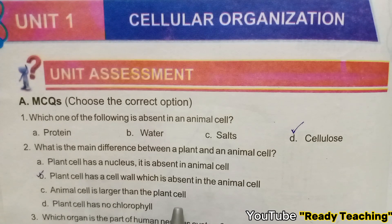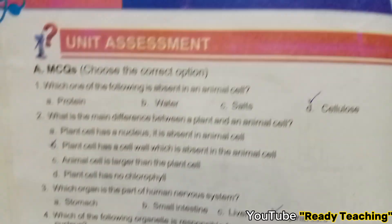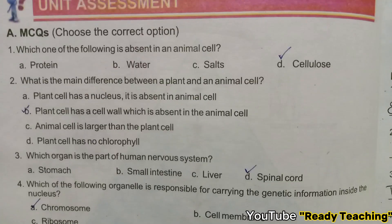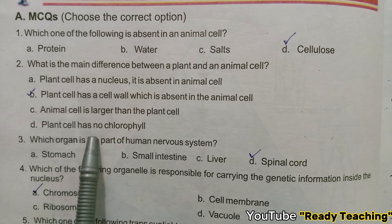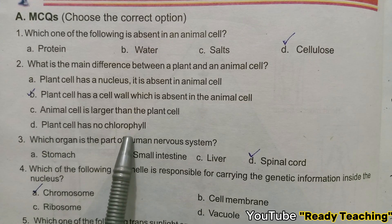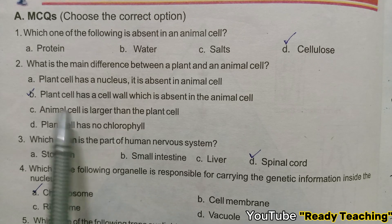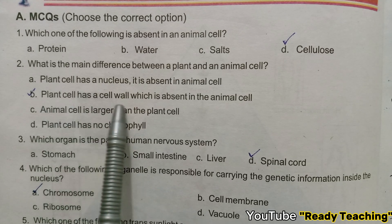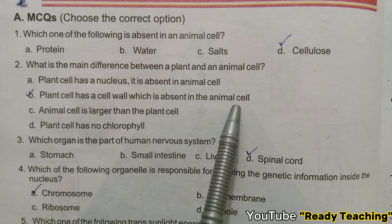Animal cell is larger than plant cell — incorrect, there is no significant size difference between animal and plant cells. Another option: plant cell has no chlorophyll — also incorrect. The correct answer remains that the plant cell has a cell wall, which is absent in the animal cell.